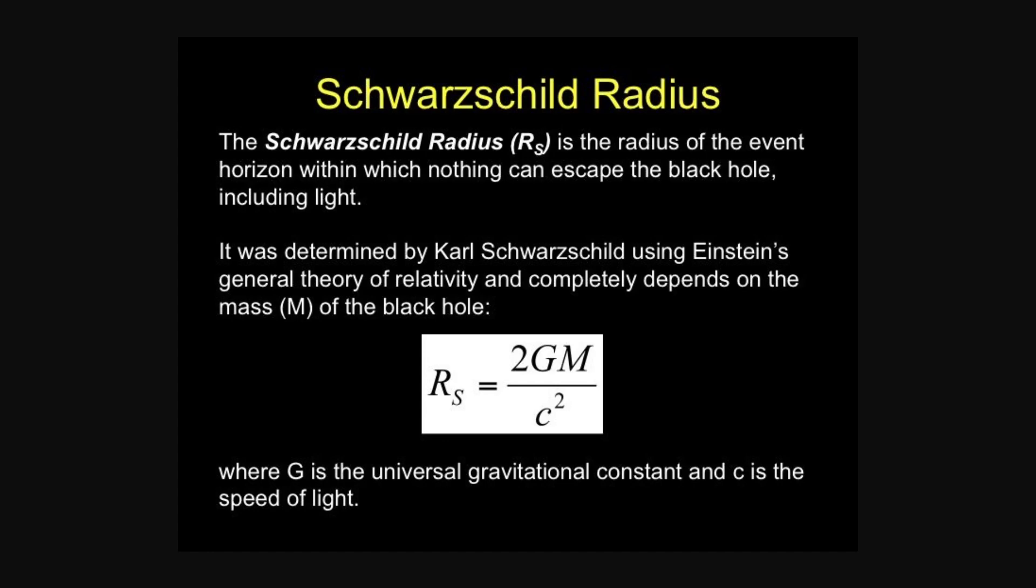Adding mass to the black hole increases the size of the outer event horizon, causing a sort of race between the horizons. To avoid this, it would be wise to add particles with the highest charge-to-mass ratio, a prime candidate being the electron, with a mass approximately 2,000 times less than a proton, but with equal charge.